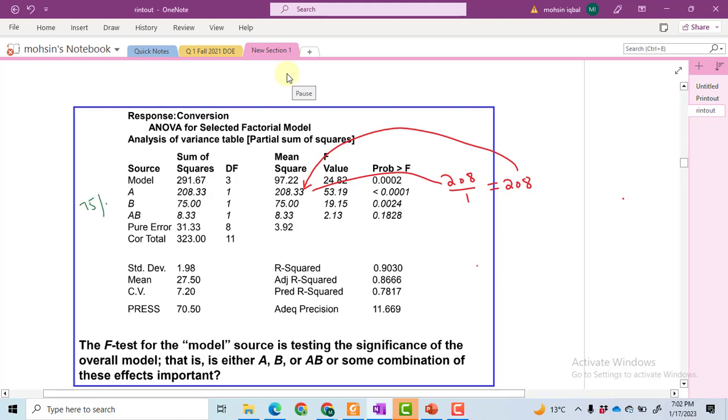We got 75. Likewise, 8.33 divided by 1 gives 8.33. How can we calculate the F value? F value can be calculated by dividing the mean square of the specific factor—like 208—by the mean square of the error, which is 3.92, and we get 53.19.